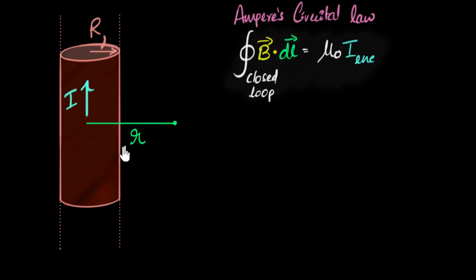Well we have seen before in Oersted's experiment that magnetic field due to a wire will always be in concentric circles. So the magnetic field over here would be in a circular shape.